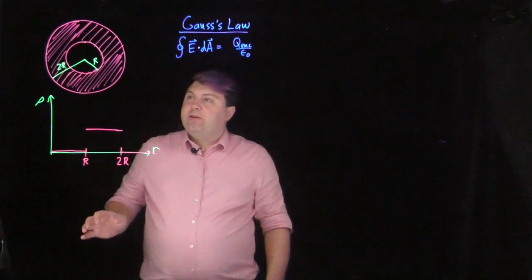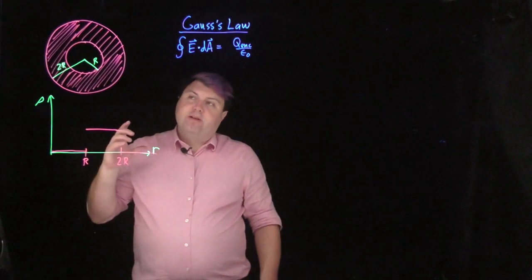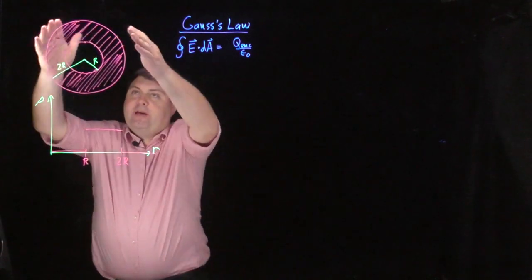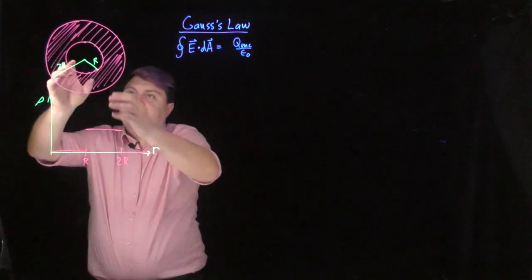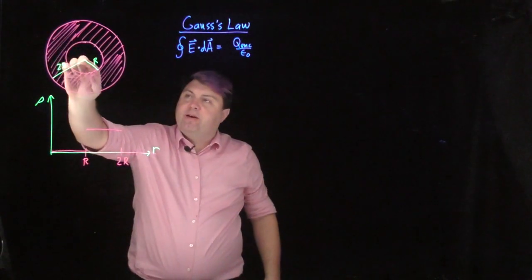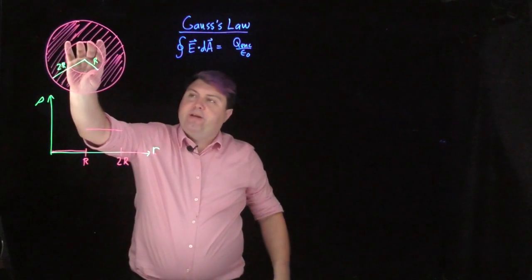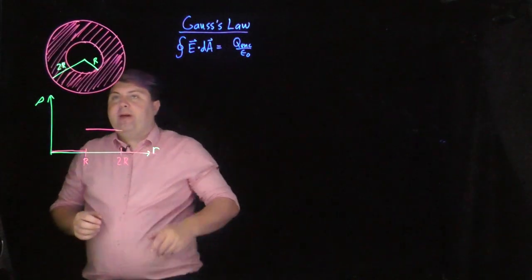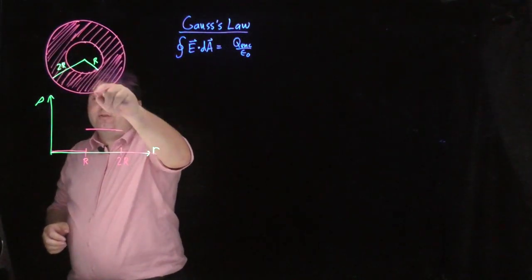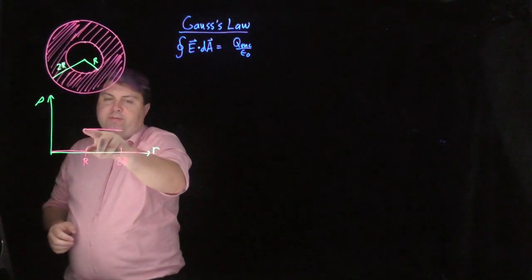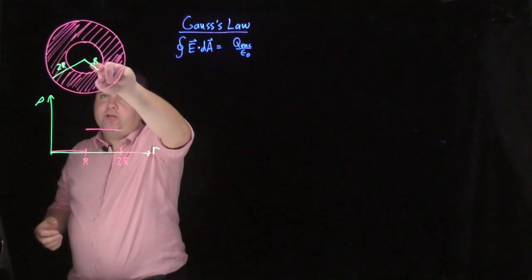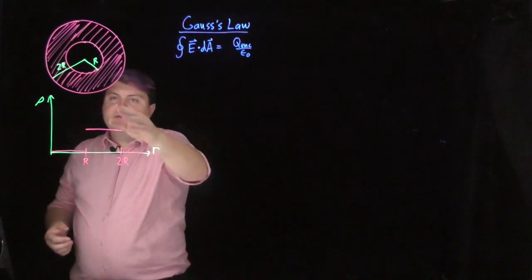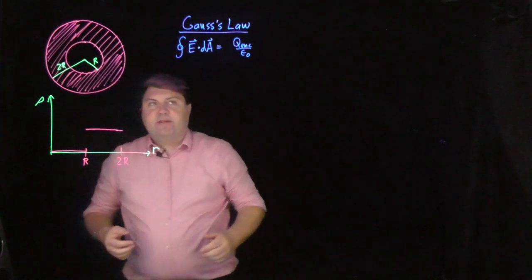Welcome. Let's take a look at what we call a semi-hollow sphere. This would be a full sphere except it has a cavity of radius r in the center. We have a charge density between r and 2r, which we can represent on this graph. We have no charge density inside this cavity and no charge density outside the sphere.